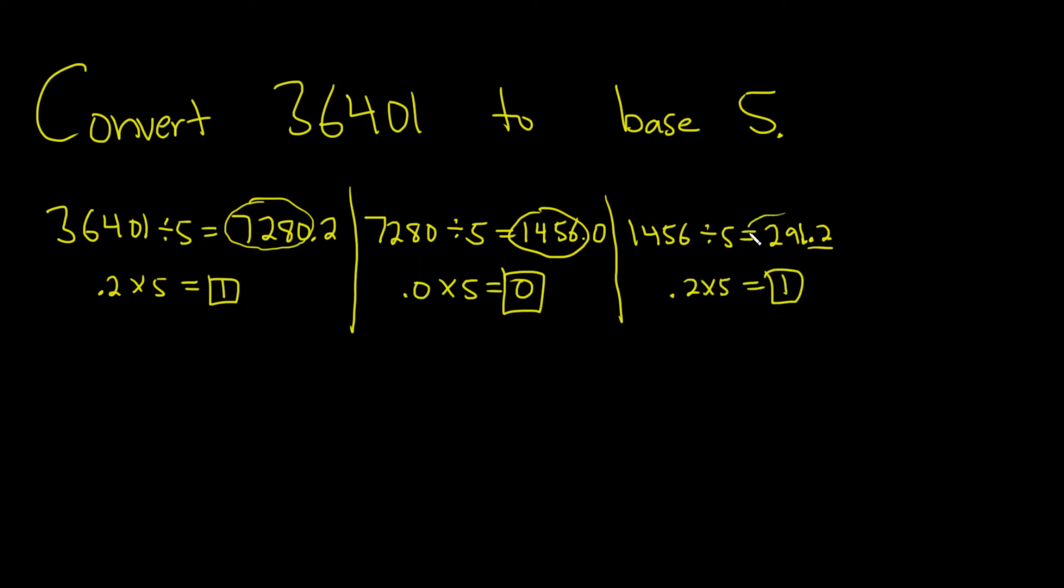Then you do it again. Take 291, divide by 5. So 291 divide it by 5. What is this going to give us? 58.2, which again will be a remainder of 1, but let's check. 0.2 times 5 is equal to 1. That is the remainder.